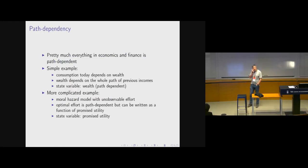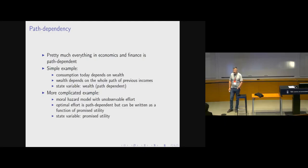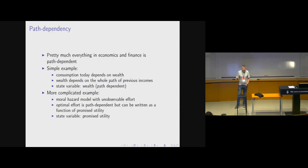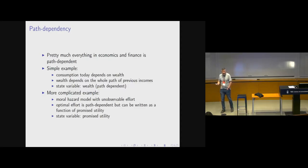Let's think about path dependency. On one hand, path dependency is pretty much everywhere — all of economics and finance is very path dependent. Think about a consumption problem in incomplete markets: consumption is going to be path dependent, depending on your wealth and other things. And your wealth is path dependent as well, because it depends on your previous income, maybe on whether you hit market constraints.